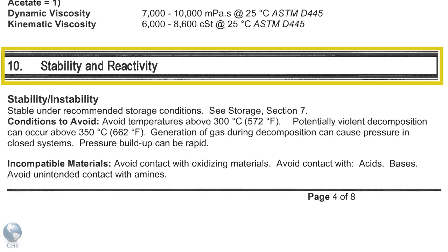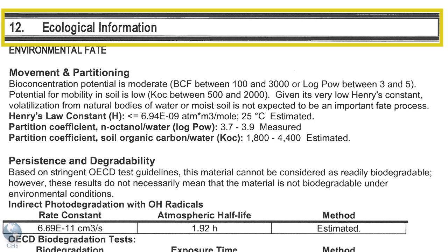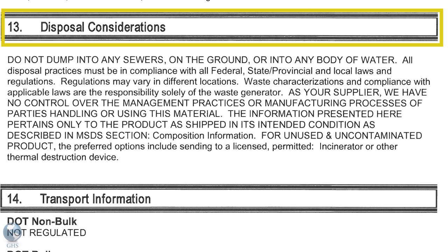Section 10 - Stability and Reactivity lists chemical stability and possibility of hazardous reactions. Section 11 - Toxicological Information includes routes of exposure, related symptoms, acute and chronic effects, and numerical measures of toxicity. Section 12 - Ecological Information provides information to evaluate the environmental impact of the chemical if it were released to the environment. Section 13 - Disposal Considerations provides guidance on proper disposal practices, recycling or reclamation of the chemical or its container, and safe handling practices.